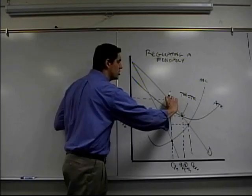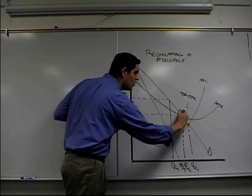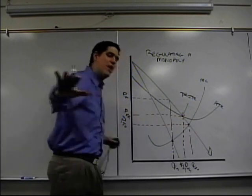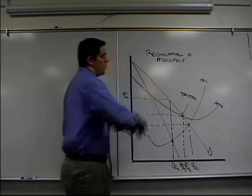If they were producing here, they're producing profit. Here, profit. Here, they're producing breaking even. Here, with a loss. Only spot in the whole place. That's why it's called fair return.